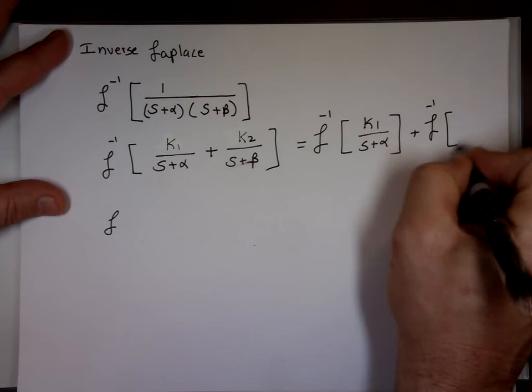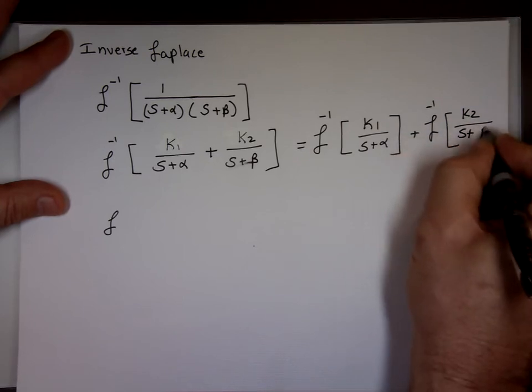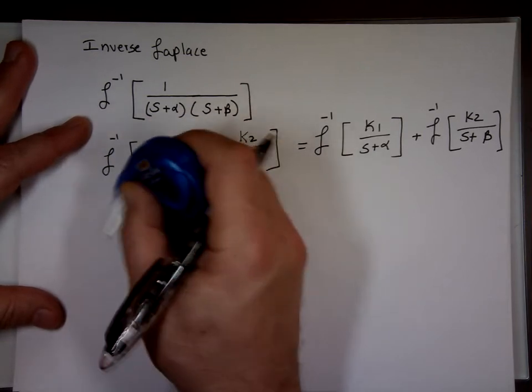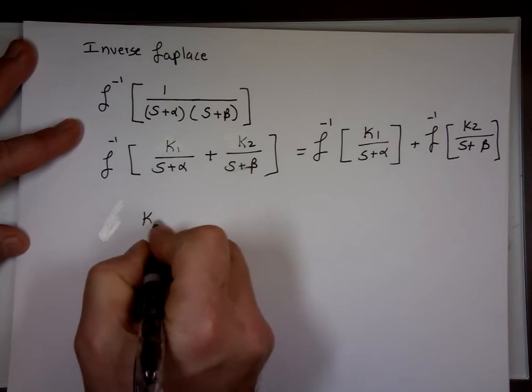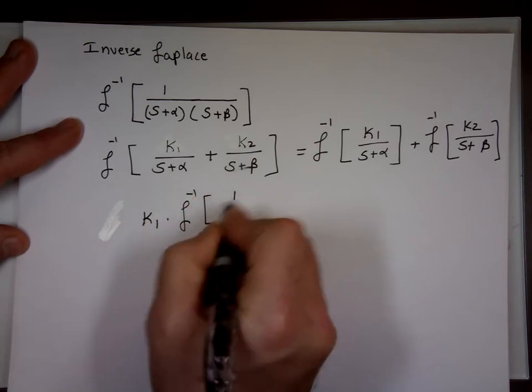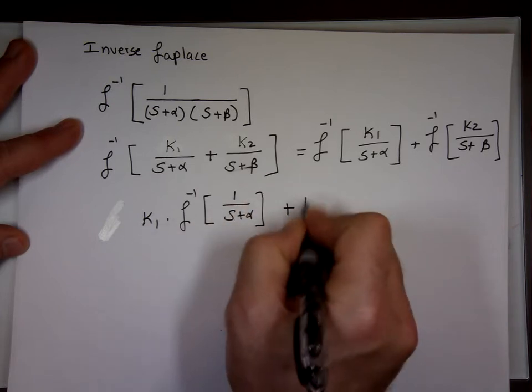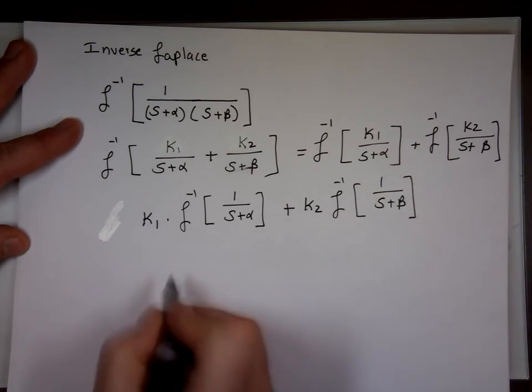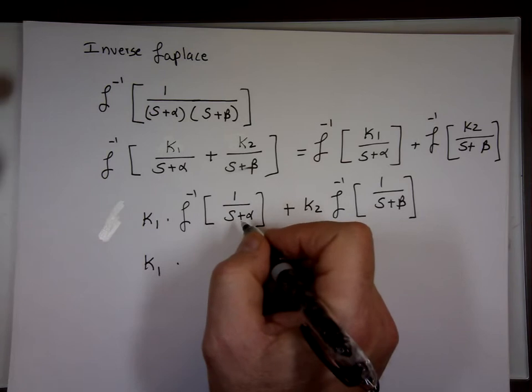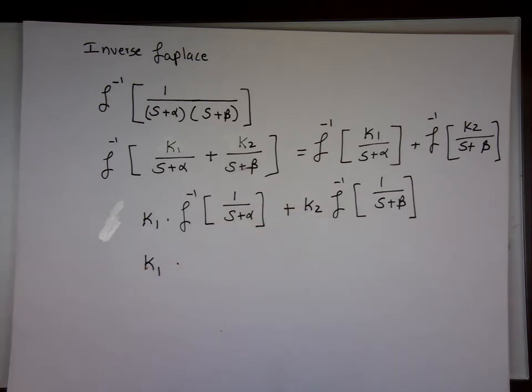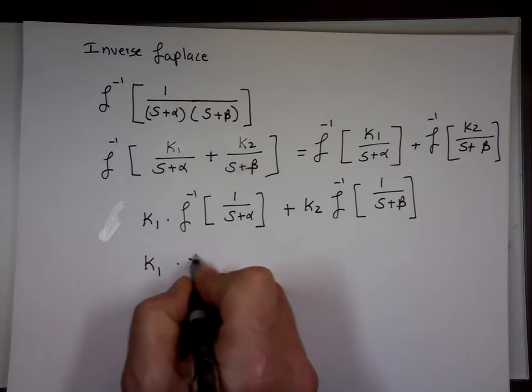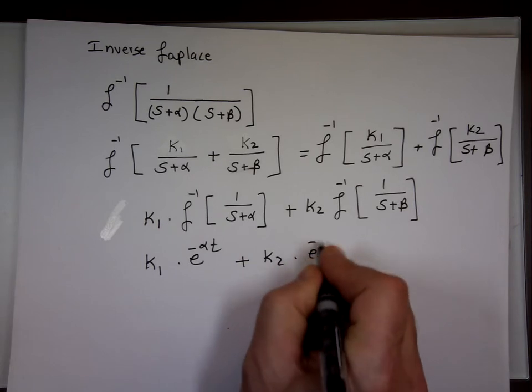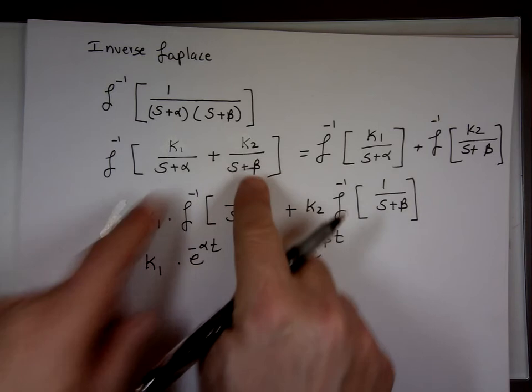Plus the inverse Laplace of K2 over S+β. And if you know what K1, K2, if you know what that is, it's going to be constant. If you take them outside, 1 over S+α, plus K2 is a constant, take it outside the integral, 1 over S+β. Which means, here's K1, what function has 1 over S+α for Laplace? E to the negative αt. Plus K2, what function has 1 over S+β for Laplace? E to the negative βt. So if I can take this and make it look like this, then I know the answer to it.